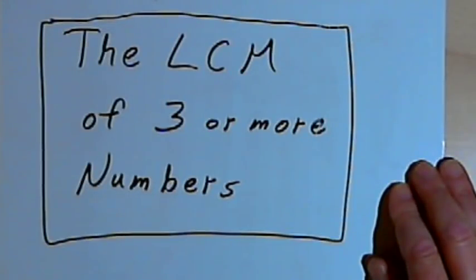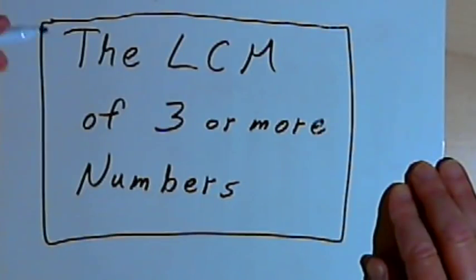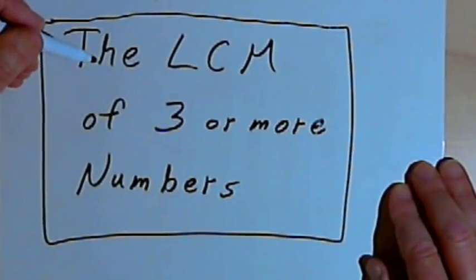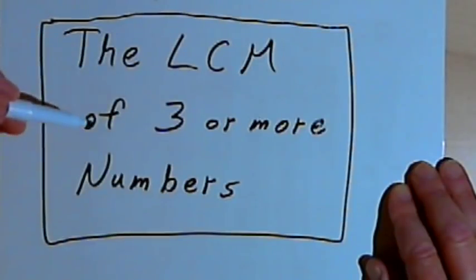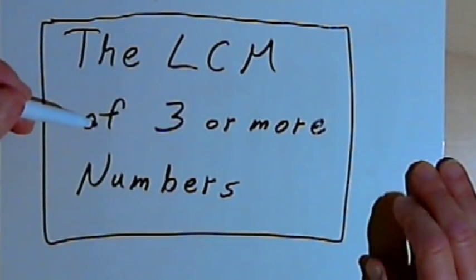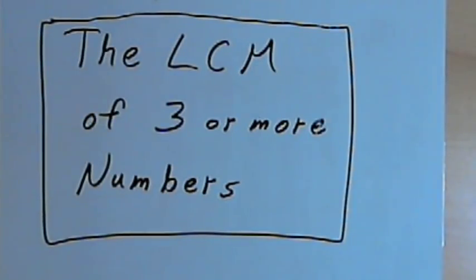This video is provided as supplementary material for courses taught at Howard Community College. In this video I want to talk about finding the least common multiple, or LCM, of three or more numbers.